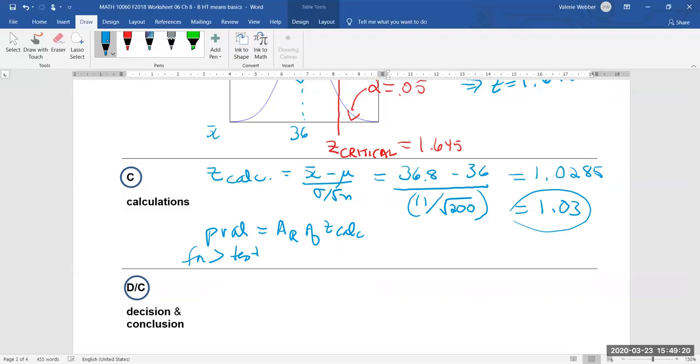And when zed is equal to 1.03 it implies the area to the left is equal to 0.8485 which of course implies area to the right is 1 minus that. And we get 0.1515.